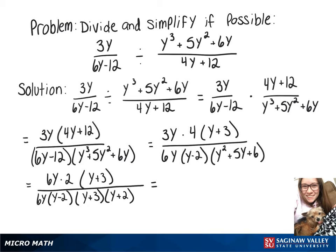To simplify some of this, we can rewrite it as 6y over 6y times y plus 3 over y plus 3 times 2 over y minus 2 times y plus 2. And now these will cancel out, leaving us with 2 over y minus 2 times y plus 2.